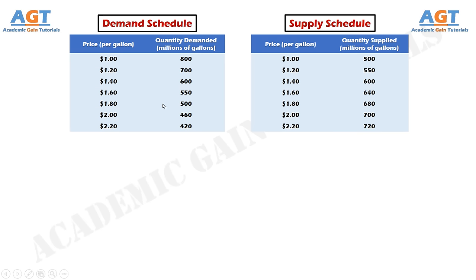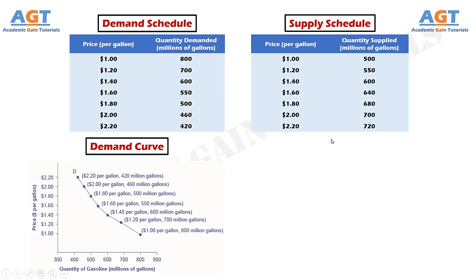From the demand schedule we will get the demand curve, and from the supply schedule we will get the supply curve. The demand curve is a graphical representation of the relationship between price and quantity demanded of a certain good or service, with quantity on the horizontal axis and the price on the vertical axis. This is a demand curve plotted from the data from the demand schedule, with demand quantity of gasoline on the horizontal axis and price per gallon on the vertical axis. Demand curves may appear relatively steep or flat, or straight or curved.